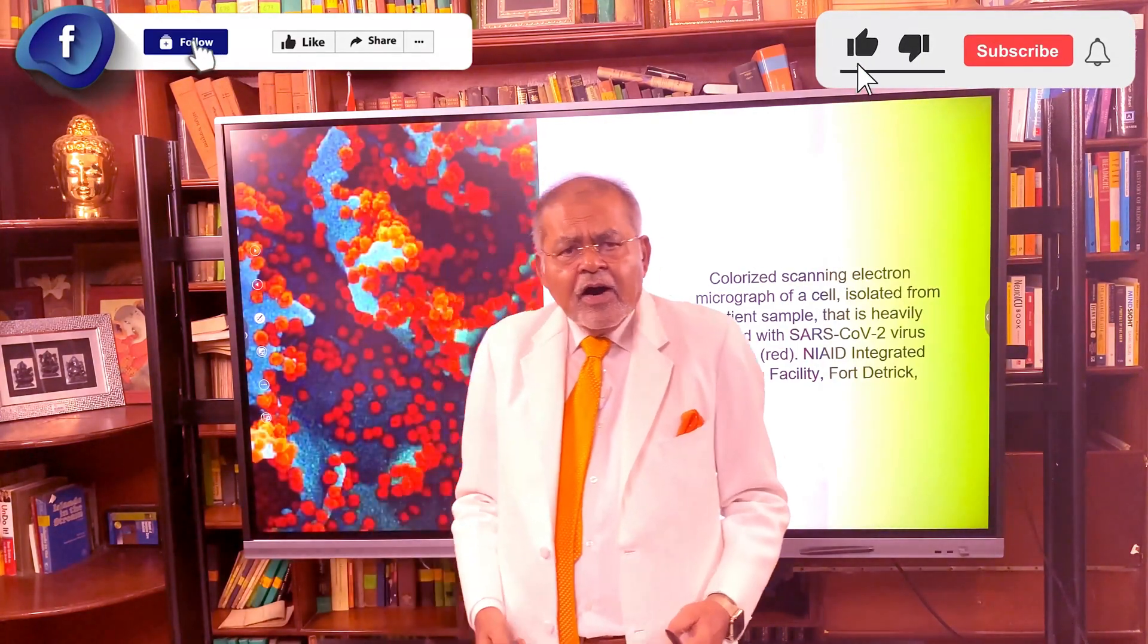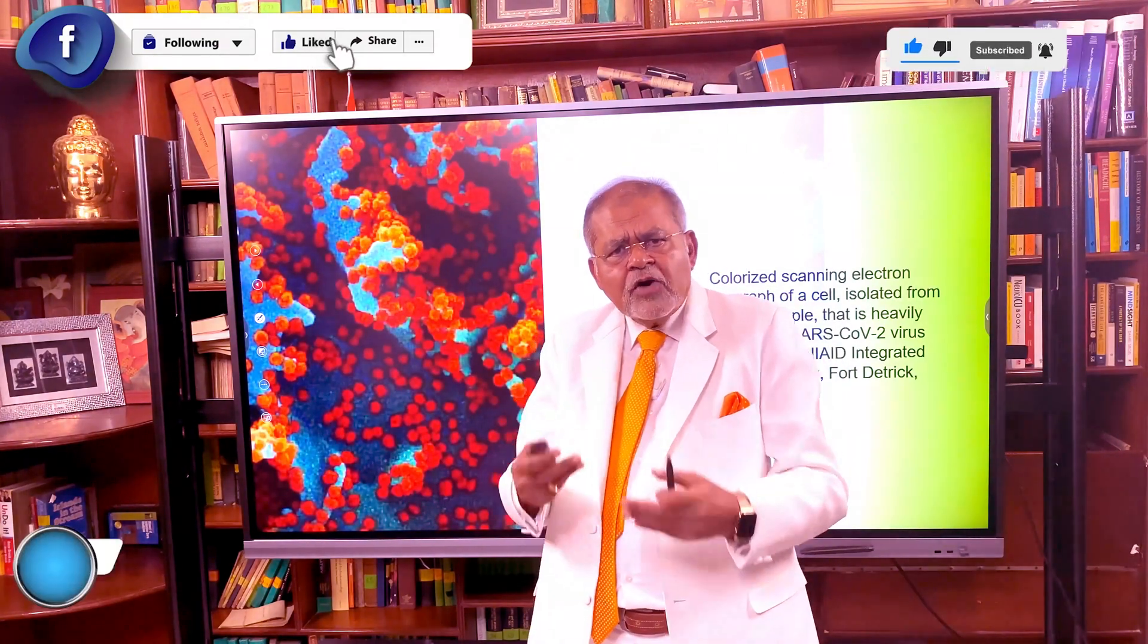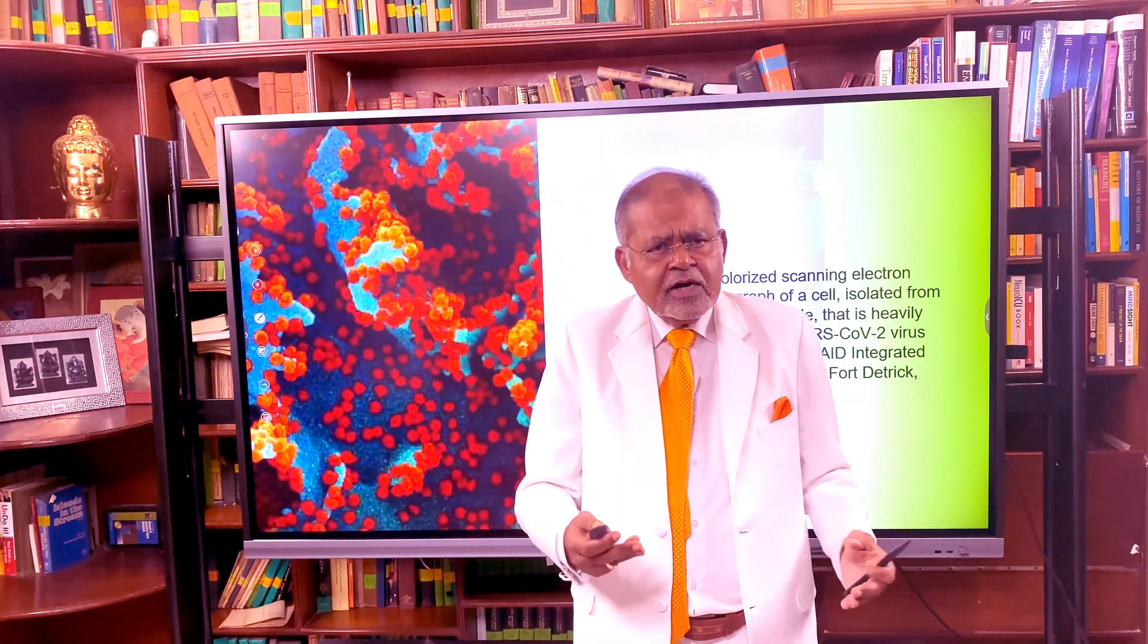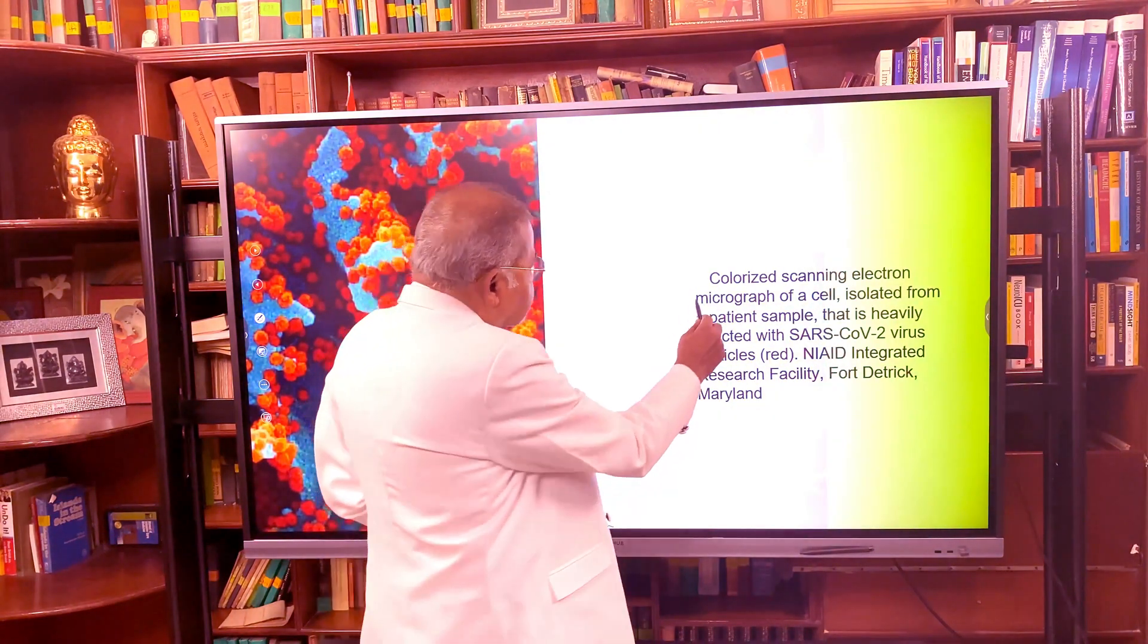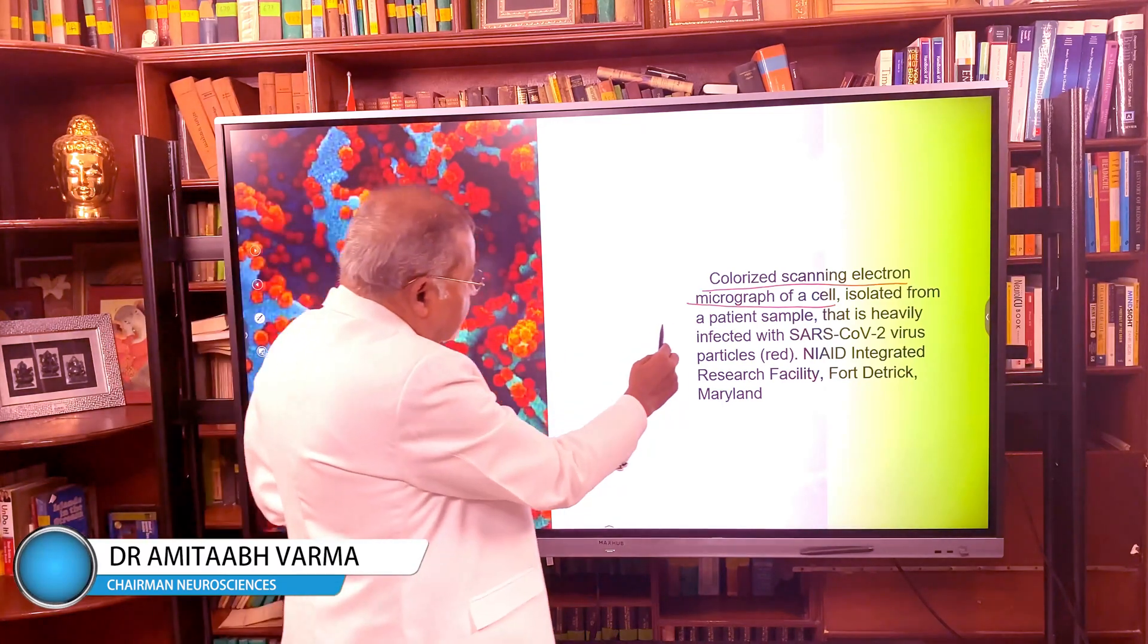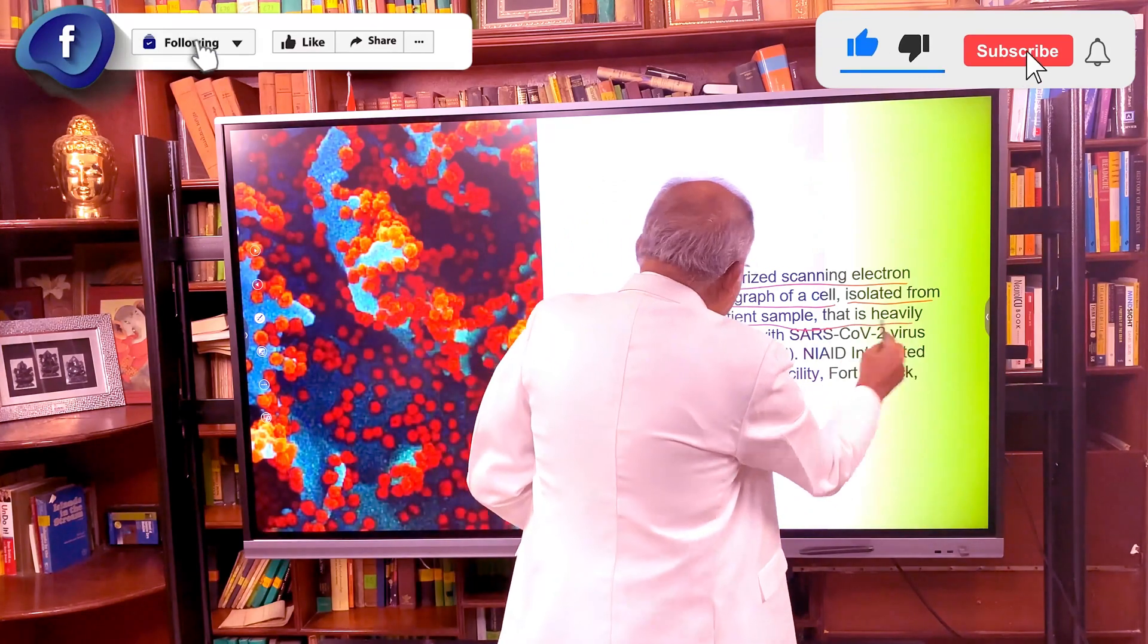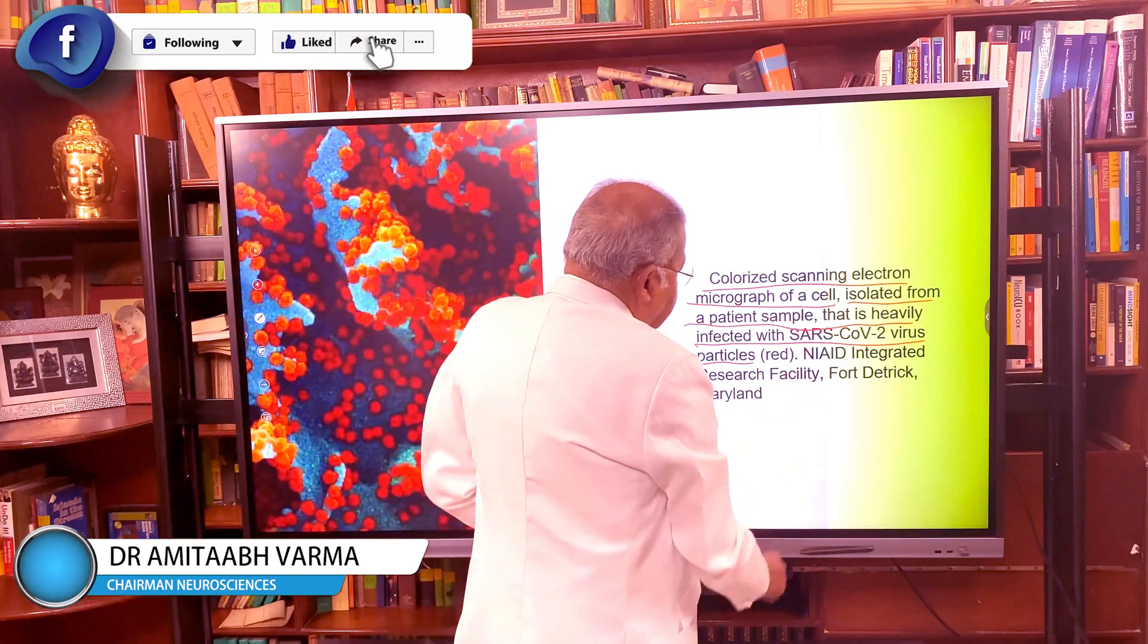What happens? Why is it so? When the coronavirus multiplies and increases in number, then cells are destroyed and inner organs are destroyed. This colorized scanning electron micrograph of a cell—mind it, coronavirus is not red color—isolated from a patient sample that is heavily infected with SARS-CoV-2 virus.